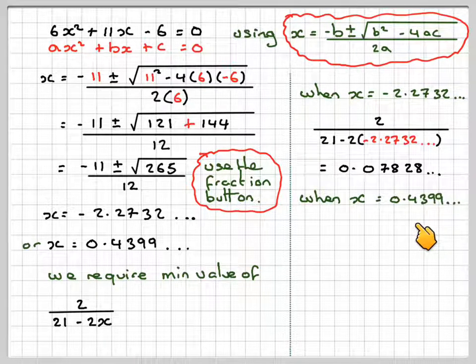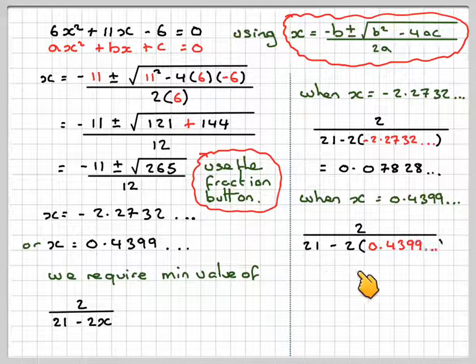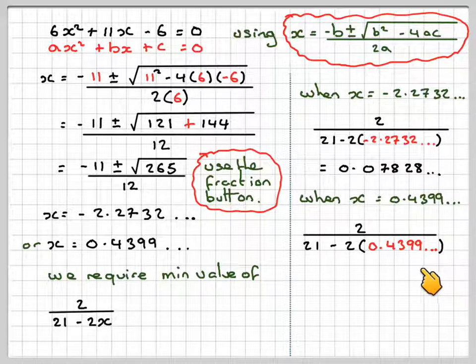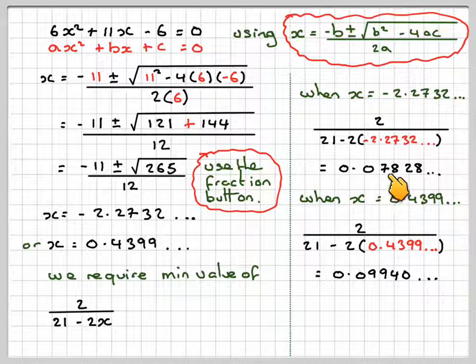And when x is equal to 0.4399, we're going to get 2 divided by 21 minus 2 times 0.4399, which gives me 0.09942, which is the smaller of the two values.